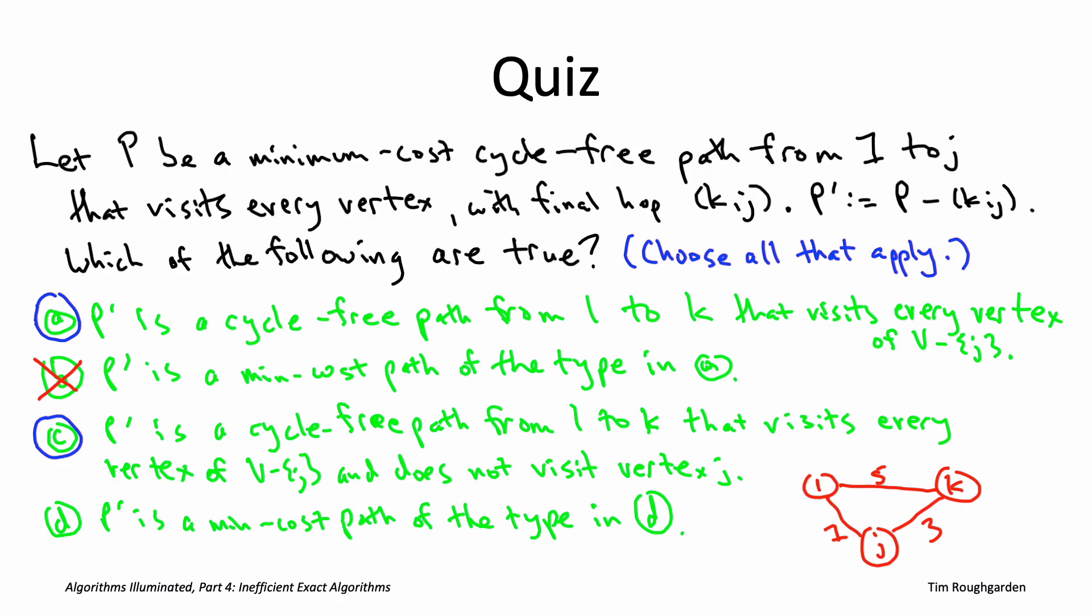So in other words, p prime being a path that is precluded from using vertex j, it potentially cannot compete with other paths that are allowed to use vertex j. The good news is that p prime still is an optimal solution to a suitable subproblem, namely the type of subproblem mentioned in the second two answers. So in other words, d is in fact a correct answer. The way you'd prove this is exactly the same kind of proof by contradiction, cut and paste argument that we've seen in many other dynamic programming algorithms. So start from an optimal path from one to j, cycle free, visiting every vertex once. That's this light blue path in the upper left corner. Now we're thinking about plucking off that final hop k comma j, so that leaves us with the residual light blue path from one to k. We want to argue that that's a minimum cost path of the given type. One that goes from one to k, visits every vertex other than j once, and does not visit vertex j at all.